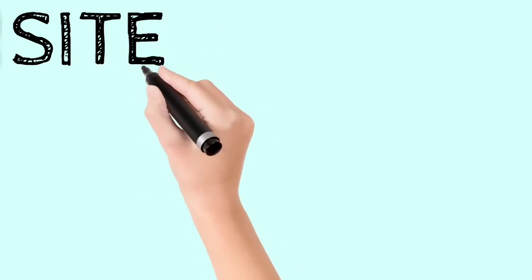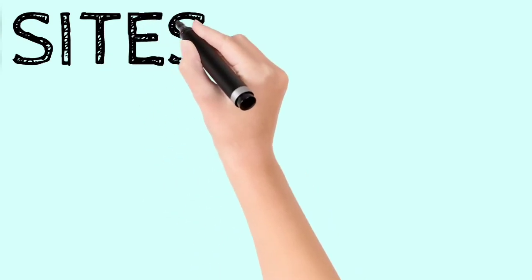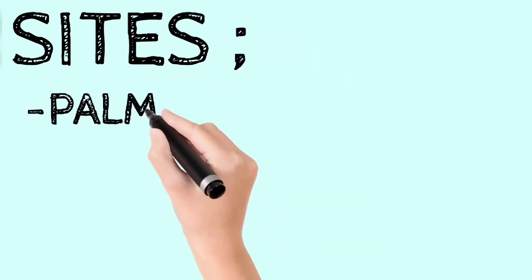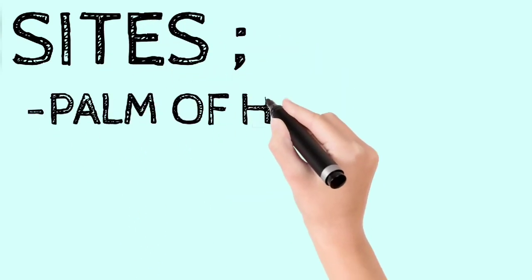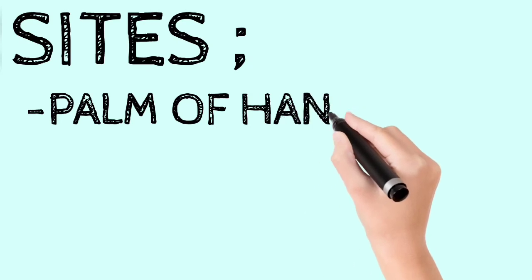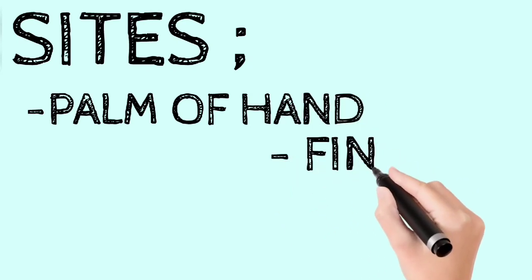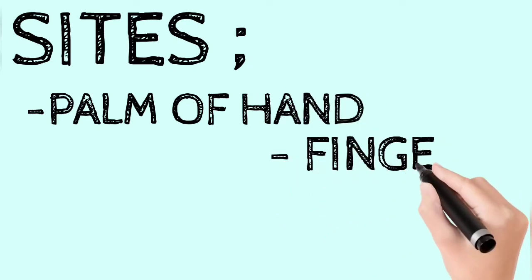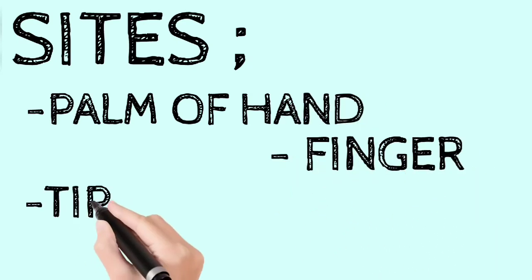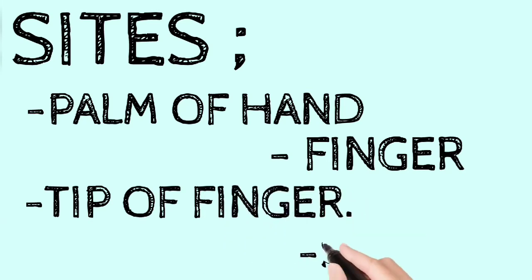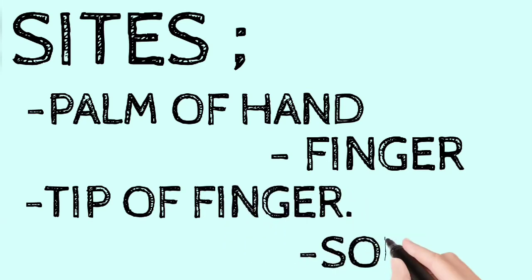The sites for the implantation dermoid cyst: it occurs at the site of the palm of the hand, fingers, tip of the finger, and sole.